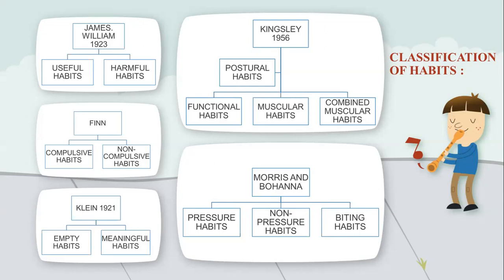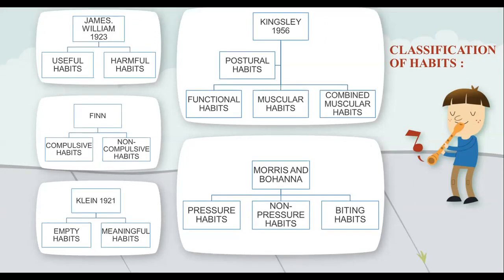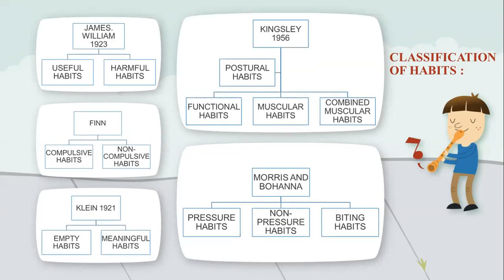Keen in the year 1921 classified habits into empty and meaningful habits. An empty habit is a meaningless habit that can be treated easily by a dentist using reminder therapy. Whereas a meaningful habit is a habit with a deep-rooted psychological problem. Kingsley in the year 1956 classified habits into postural habits, functional habits, muscular habits, and combined muscular habits. Postural habits include chin propping and abnormal pillowing; functional habits include mouth breathing; muscular habits include tongue thrusting and finger sucking; combined muscular habits include thumb and finger sucking.